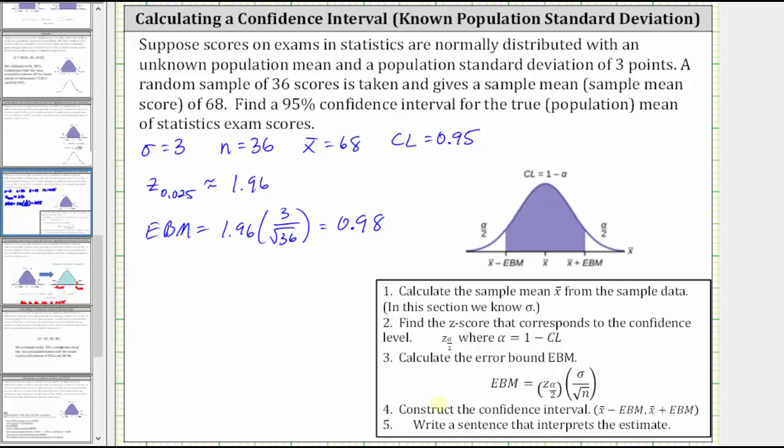Now that we have the error bound, we can construct the confidence interval, which is x bar minus the error bound to x bar plus the error bound. So the confidence interval is from 68 minus 0.98 to 68 plus 0.98, which gives a confidence interval from 67.02 to 68.98.